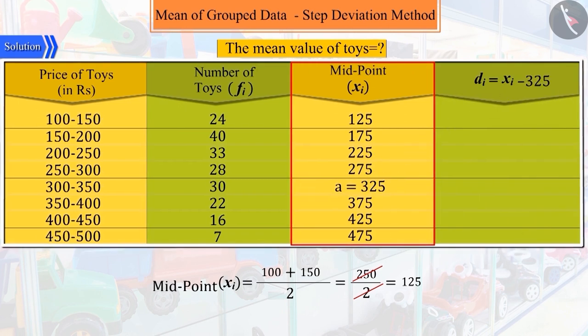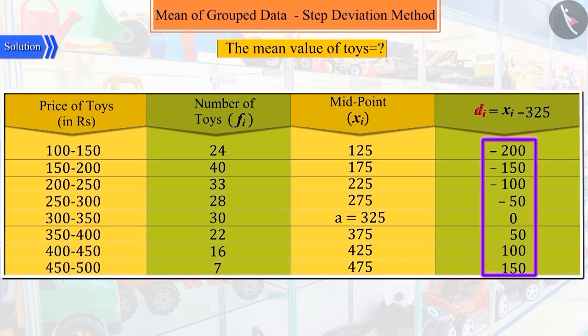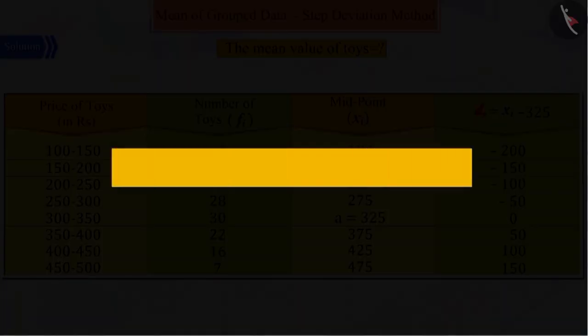On this basis, we can solve this question too, and then we multiply the FI, DI. But here, we see that the values of DI are large enough to cause an error. So to avoid errors, we will study another method here.